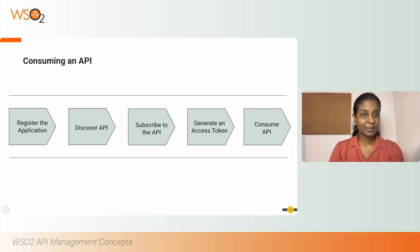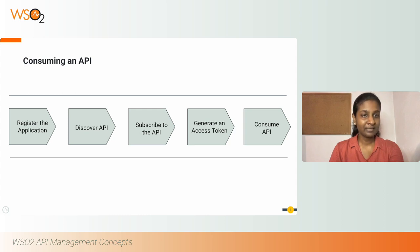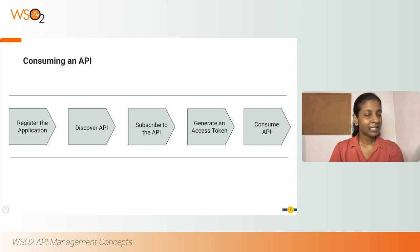For this purpose, you will log in to the company's developer portal, register your application, discover the API, subscribe to it selecting an available business plan, generate an access token for the application, and consume the API using that access token. It is as simple as that.